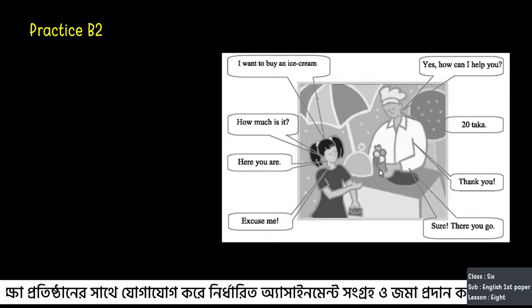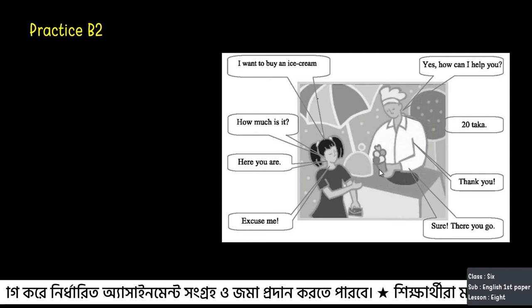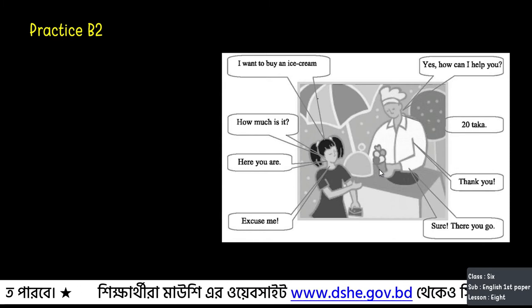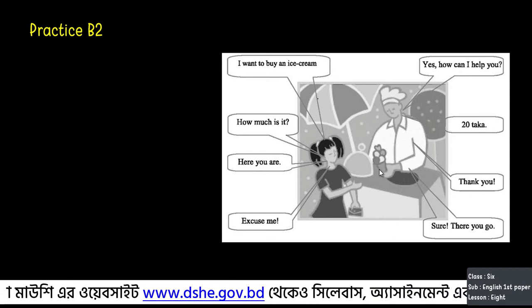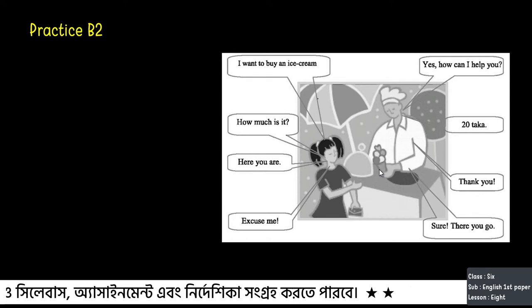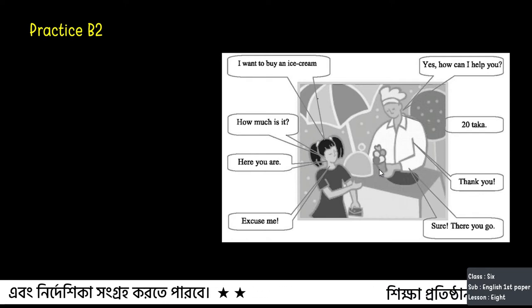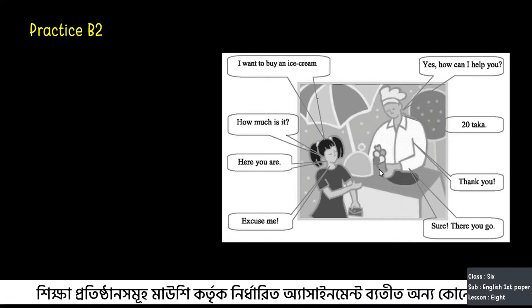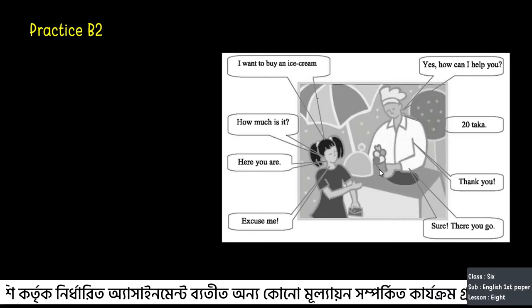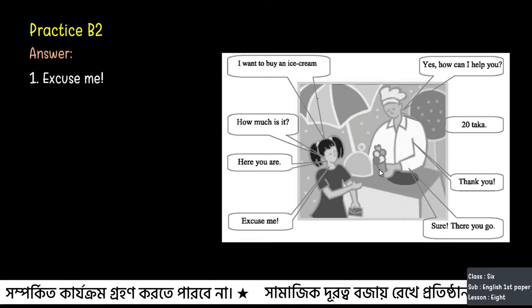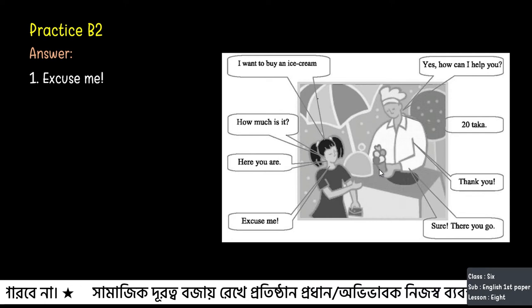Practice B2: Read the sentences or phrases in the eight speech bubbles. Put them in the right order, one to eight, to write down the conversation in your notebook. The eight bubbles are: 'I want to buy an ice cream. How much is it?', 'Here you are', 'Excuse me', 'Yes, how can I help you?', '20 taka. Thank you.' Number one will be 'Excuse me' — to initiate a conversation. Number two will be the response: 'Yes, how can I help you?'